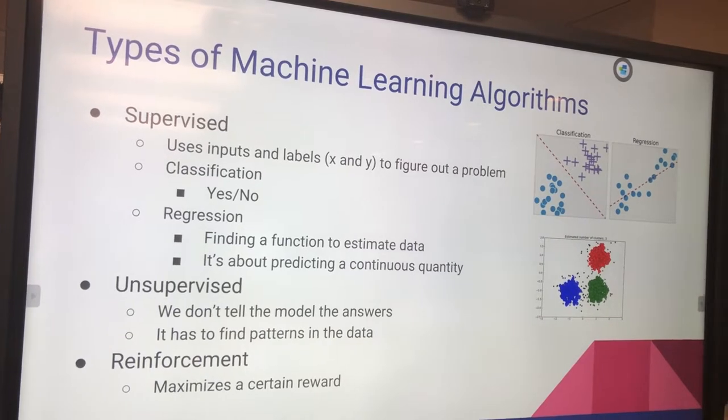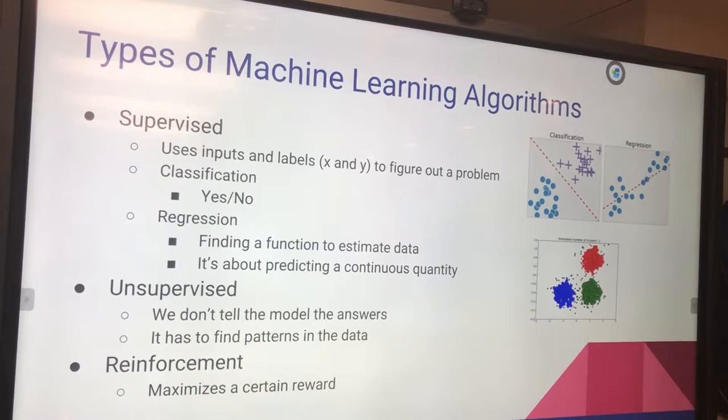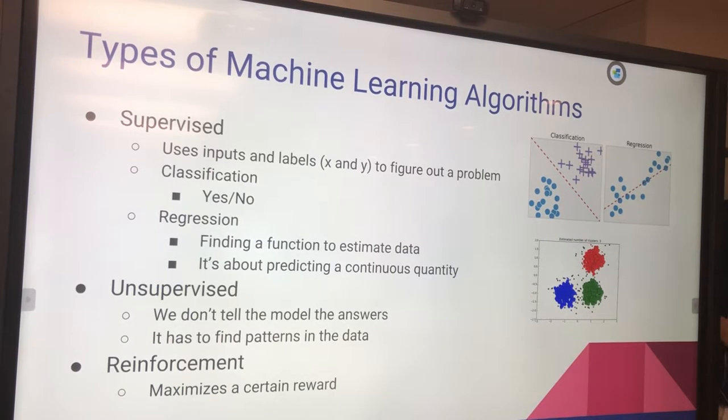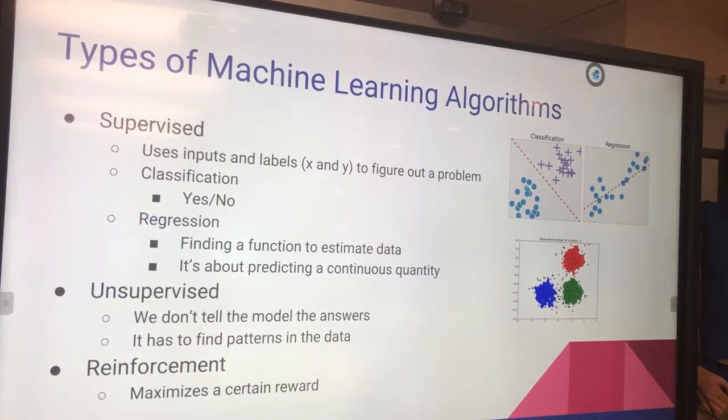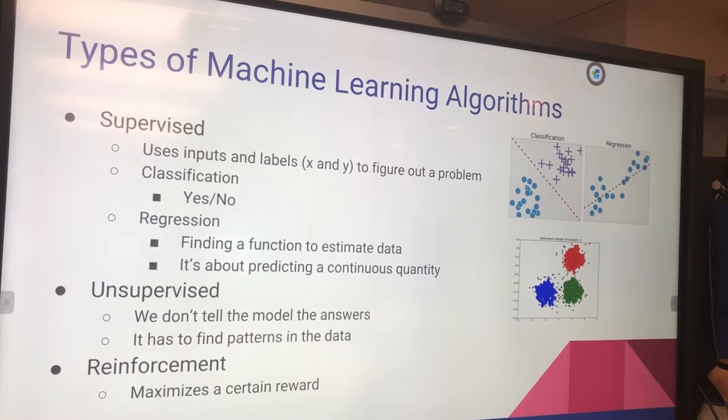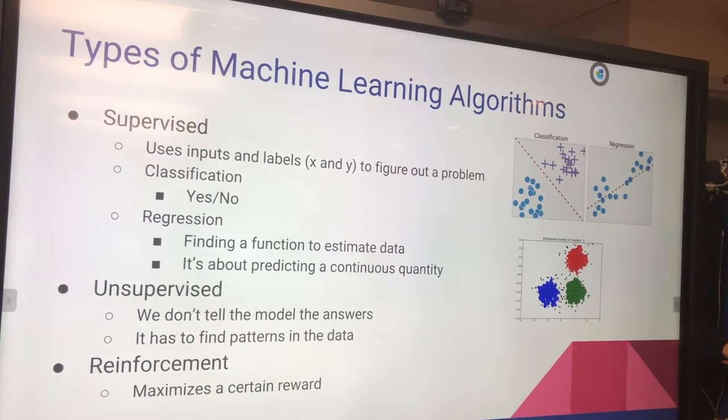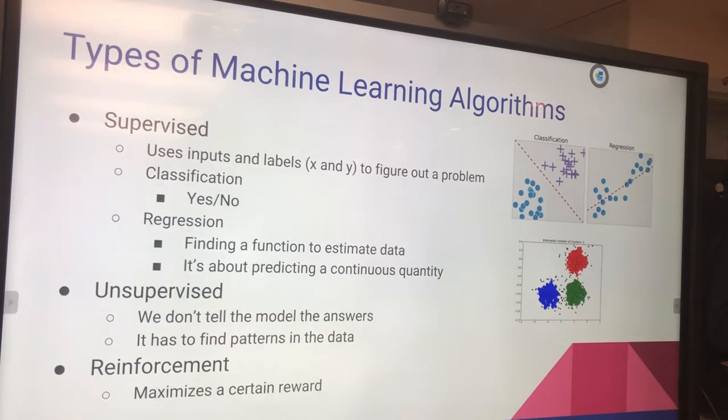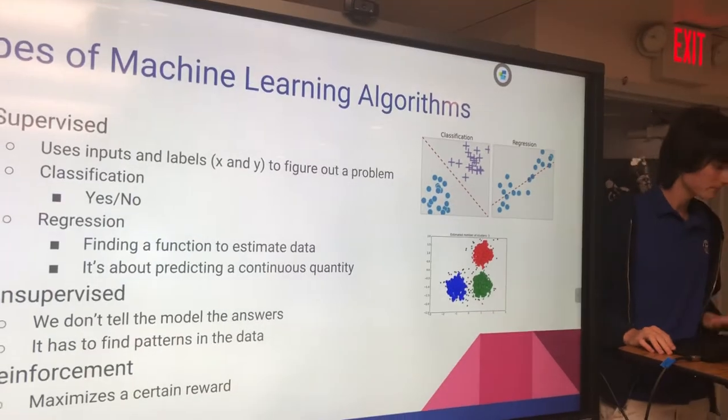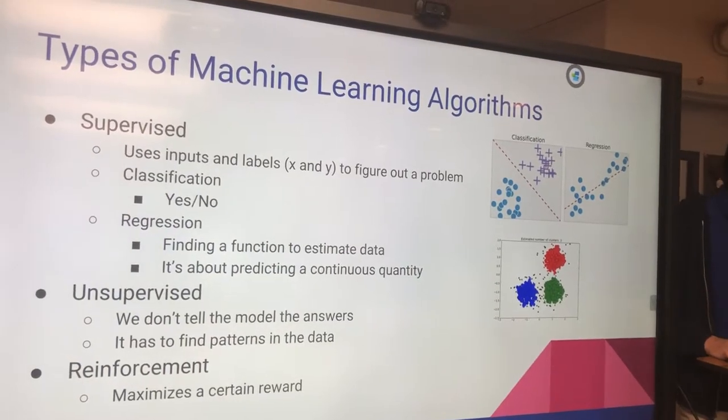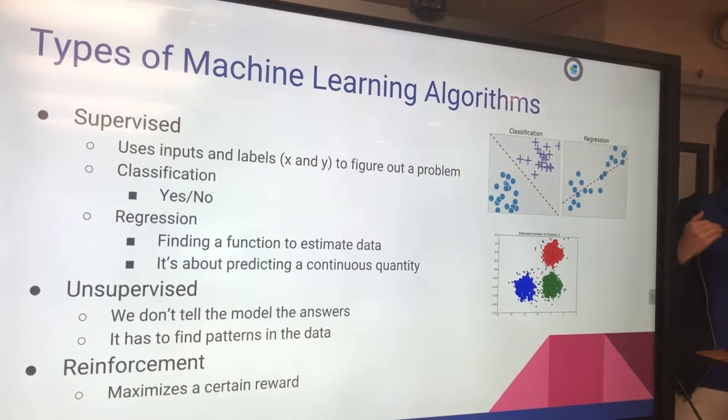Regression is not yes or no. It has more depth to it. There's more to it than just two values. You see on the right where it says regression here, that's just a whole bunch of data points. You plot the line of best fit, and given the new value, would you be able to find the new associated Y value? That's what regression is, it's about finding and predicting a continuous quantity.